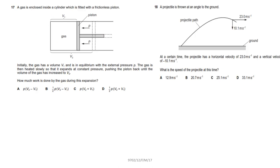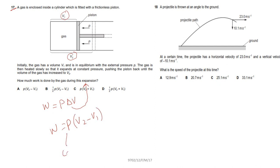Question 17: work done by a gas is W = P·ΔV. During expansion, the volume changes from V₁ to V₂, so work done = P(V₂ − V₁). Pressure is constant throughout. Option A is correct.